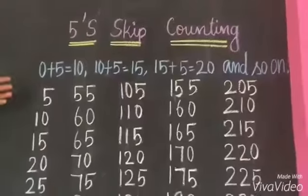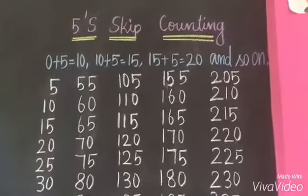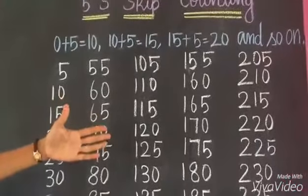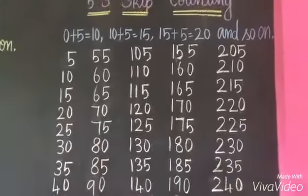5 Skip Counting. Here, we add 5 each time. 0 plus 5, 5. 5 plus 5, 10. Now, we add in our mind.